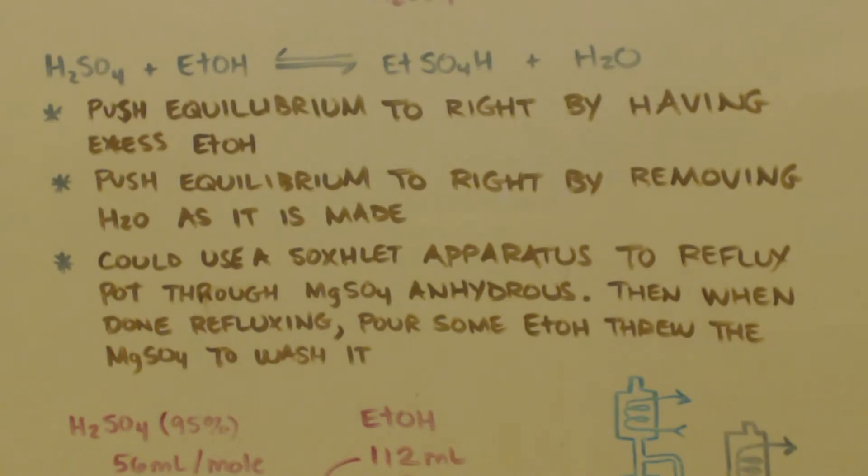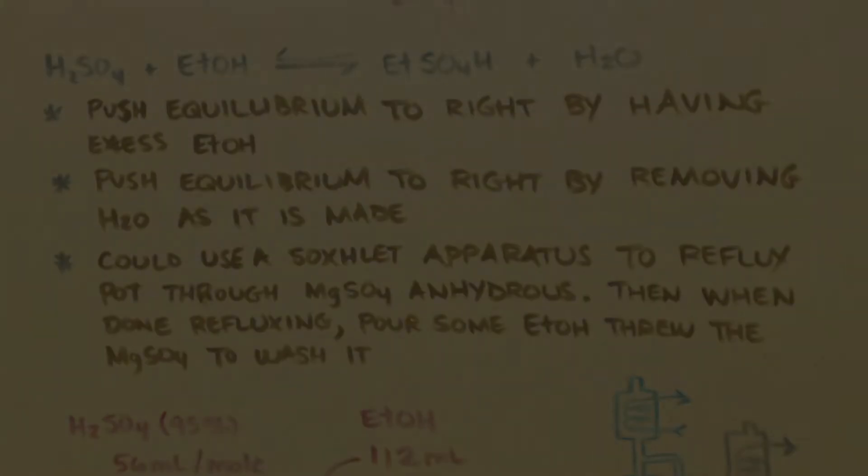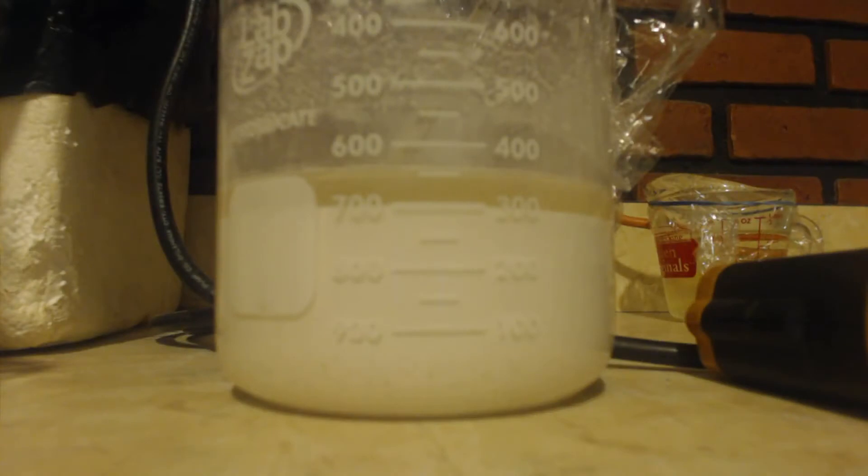And the reason I'm not going to do it, but what you could do is put this in a Soxhlet apparatus and reflux it so that the pot is refluxed through magnesium sulfate that's anhydrous. Then when you're done refluxing, pour a little bit more ethanol through the magnesium sulfate to wash out any product that's in there.